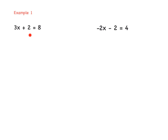Remember, we need to do the inverse operation. If we have addition here, we need to subtract. If we have minus 2, we have subtraction, so we need to add to cancel it out. Always remember we need to do the inverse operation. So we have minus 2 on the left and minus 2 on the right — whatever you do on one side, you need to do the same to the other side. So minus 2 and minus 2, then plus 2 and minus 2 gives you zero.